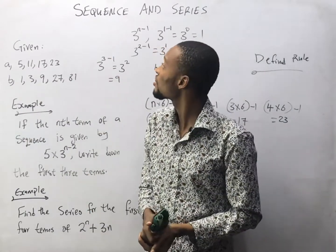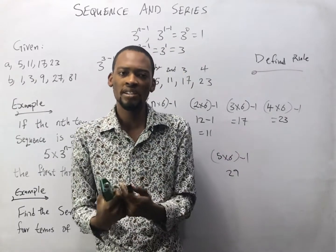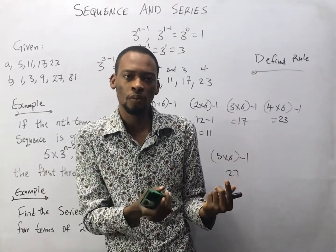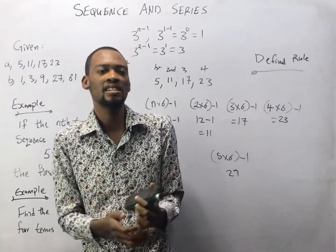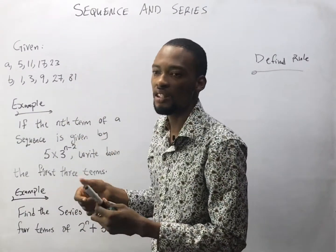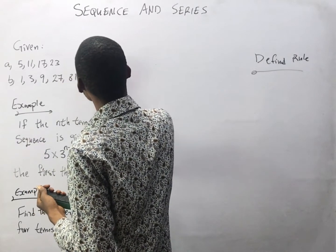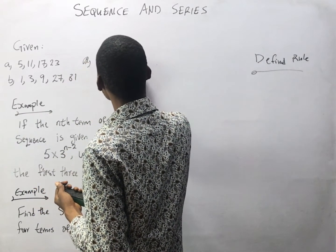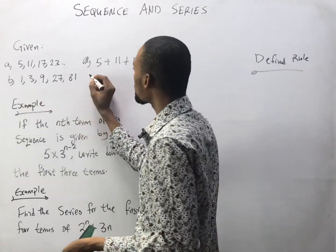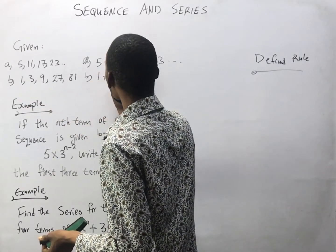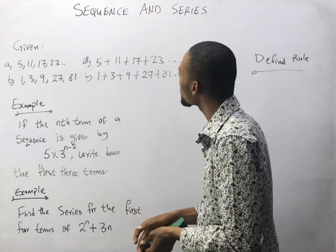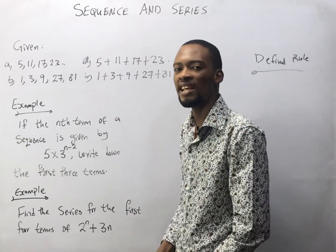That's how sequences work. You look at a collection of numbers and try to figure out what relates them — how they differ or how they relate, what to add to get the next one or subtract to get the previous one. Series is simply the addition of a sequence. So for the sequence 5, 11, 17, 23, the series becomes 5 + 11 + 17 + 23. For the other sequence, the series is 1 + 3 + 9 + 27 + 81. It's just the addition of sequences.